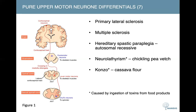For patients with purely upper motor neuron signs, the things to consider are primary lateral sclerosis, multiple sclerosis, hereditary spastic paraplegia, and tropical diseases such as neurolathyrism and konzo. Tropical diseases are quite interesting — these arise from ingestion of toxins from food products. For example, ingesting cassava flour puts you at risk of getting konzo.